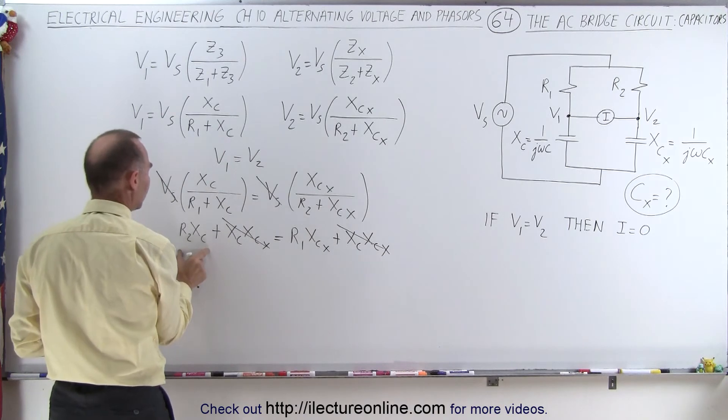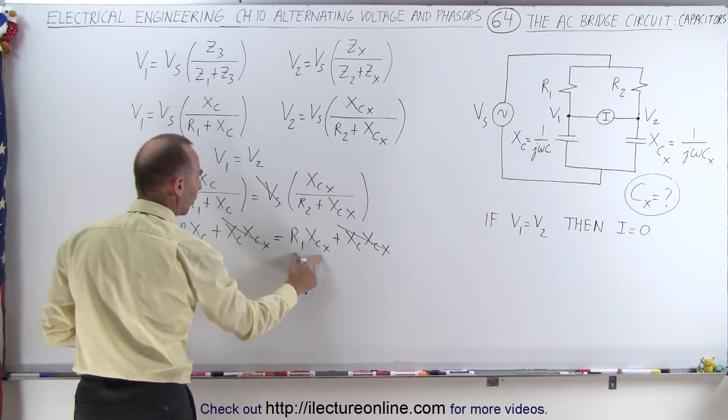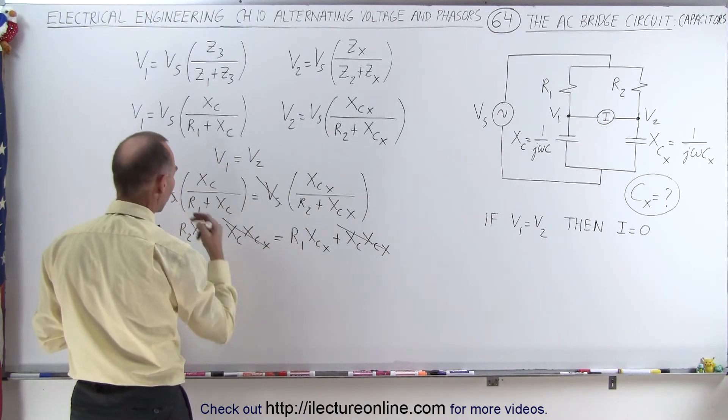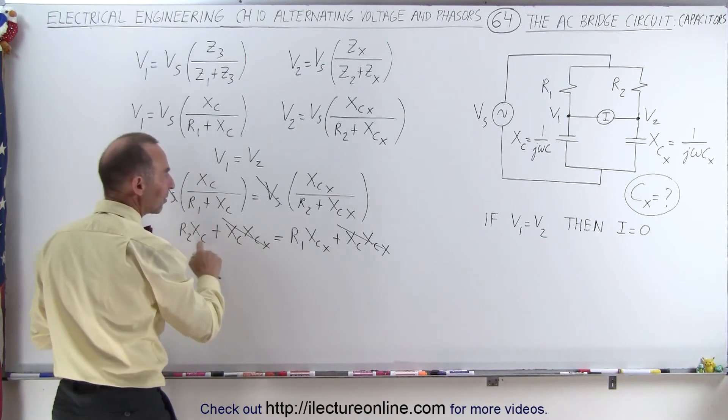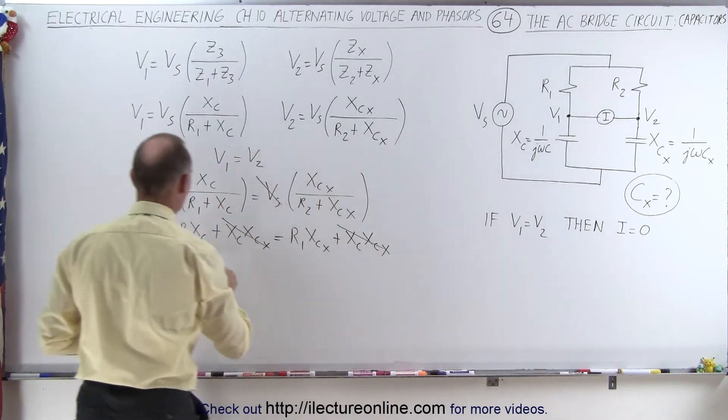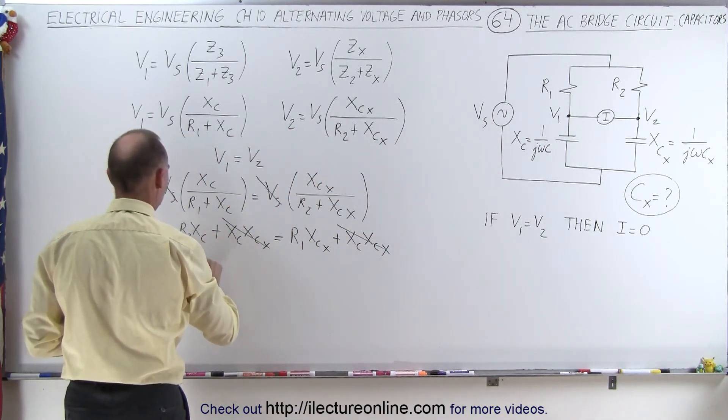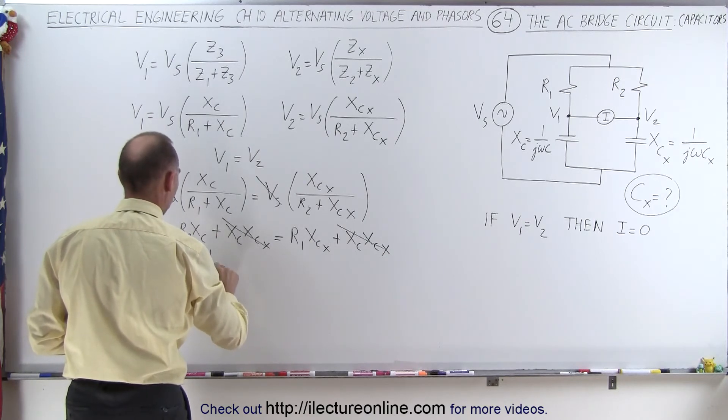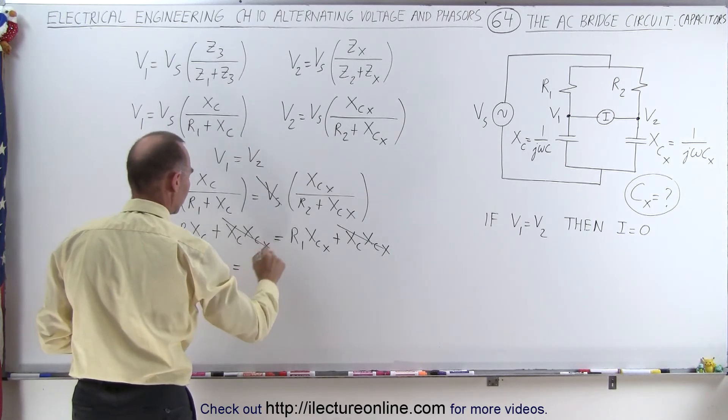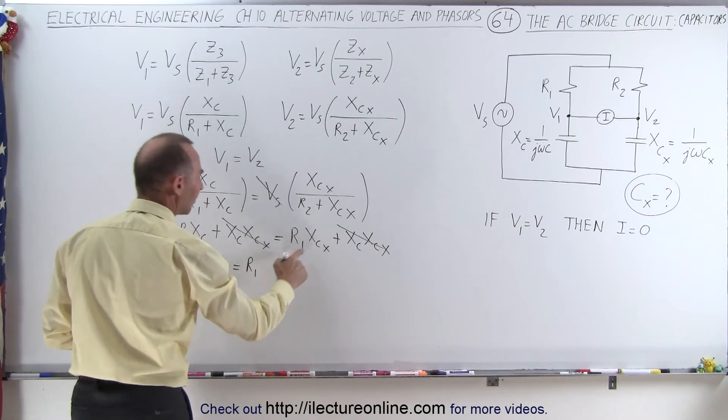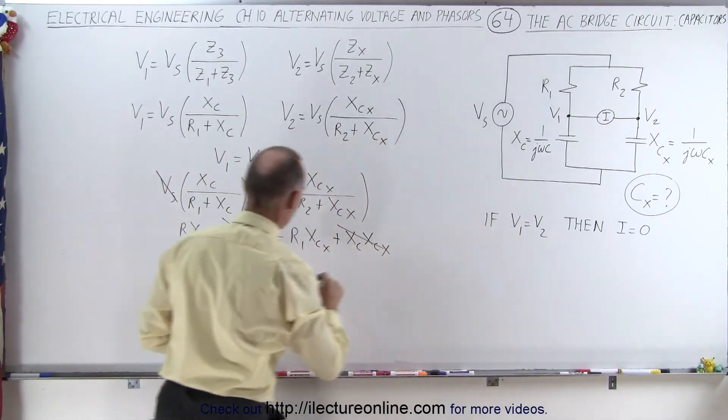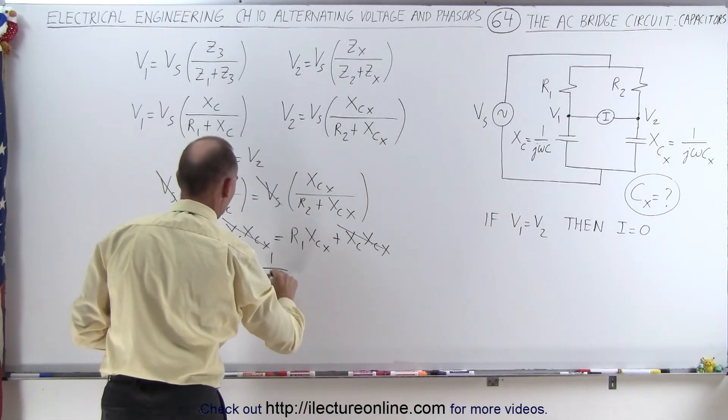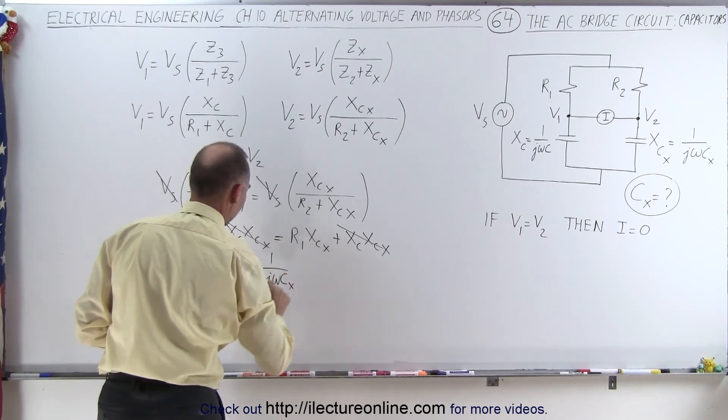And now we have R2, X sub c equals R1, X sub c sub x. Now what we're going to do is we're going to replace X sub c by 1 over J omega c, so we have R2 times 1 over J omega c is equal to R1 times X sub c sub x is now going to be replaced by 1 over J omega c sub x.